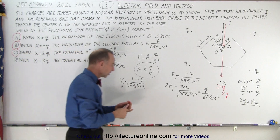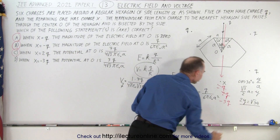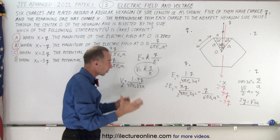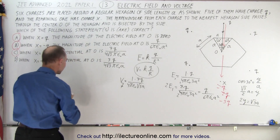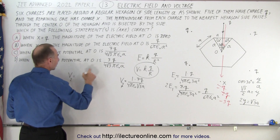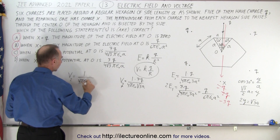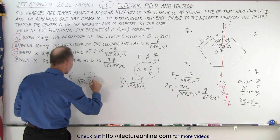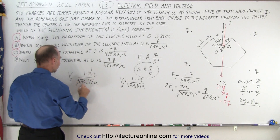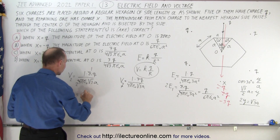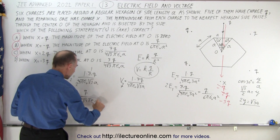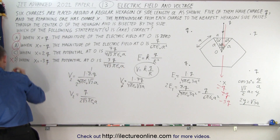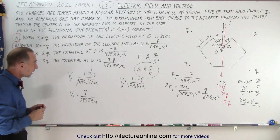Finally, we shift to X equals negative 3Q. That means we now have 5 positive Q charges and one charge of −3Q, for a net total of 2Q. So V = (1/4π ε₀) · 2Q / (√3·A). The 2 and 4 cancel, giving V = Q / (2√3 π ε₀ A). Checking statement D — that's not the same value as 3Q/(4√3 π ε₀ A), which means statement D is not correct. Therefore, A, B, and C are correct and D is not.